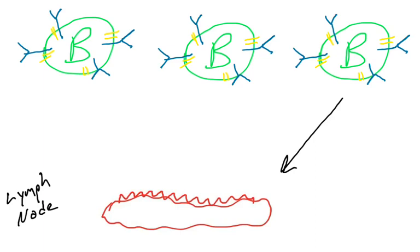But this B cell number three, its antigen binding site has a three-dimensional shape that just so happens to bind molecules on the surface of this pathogen. So let's see how this is going to trigger B cell activation.